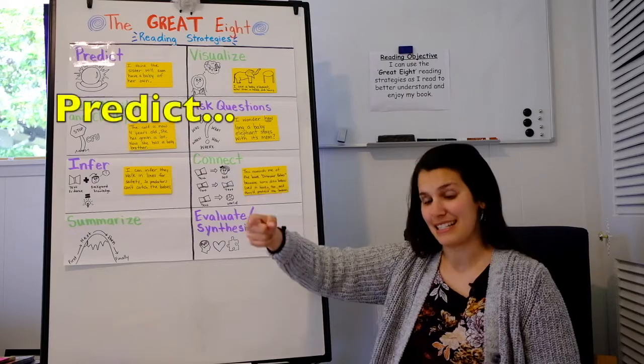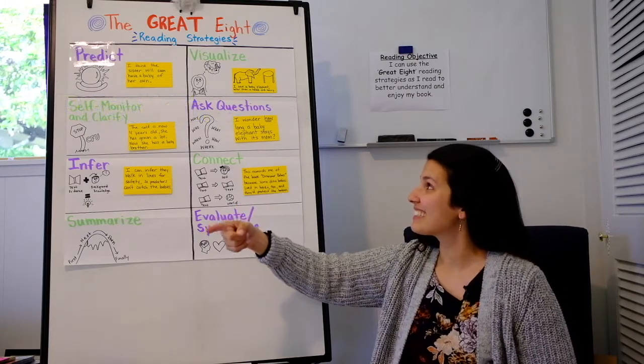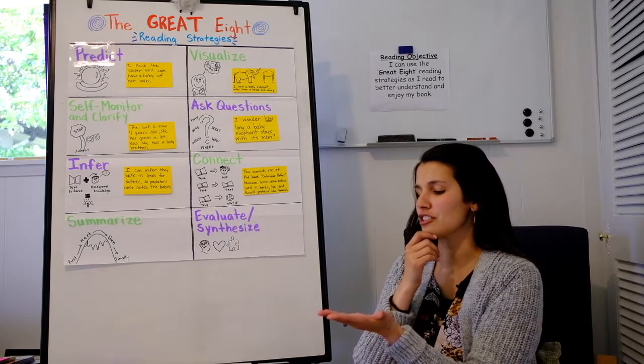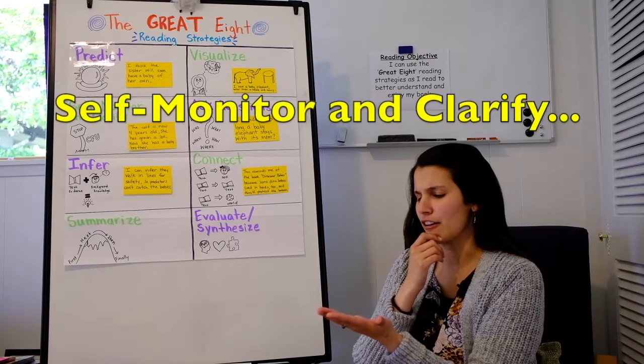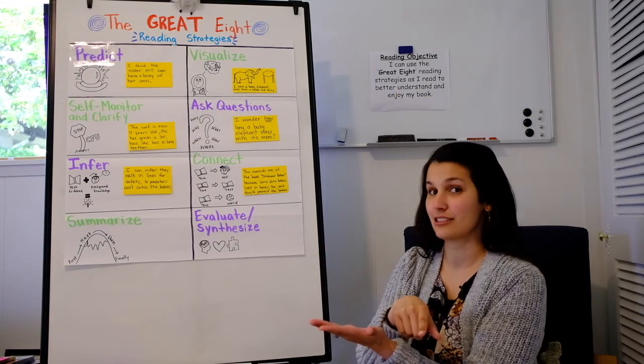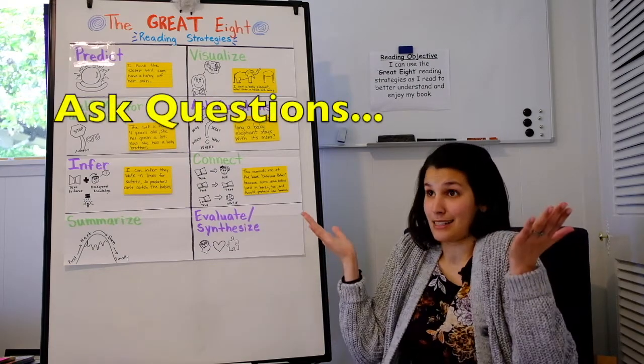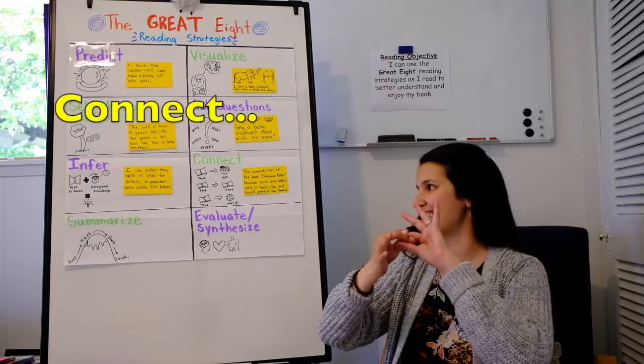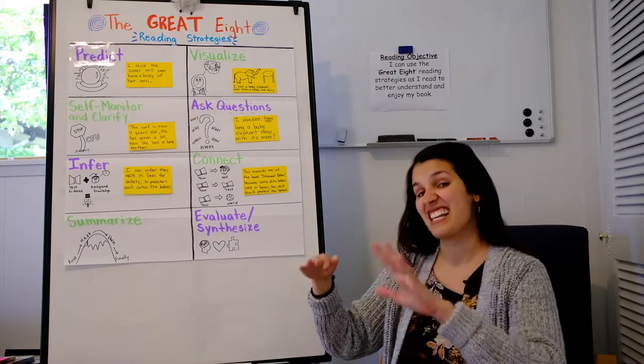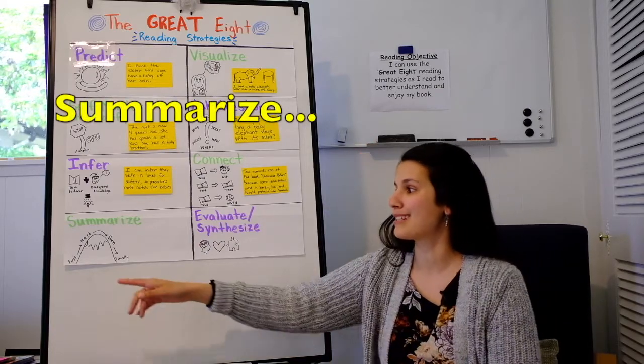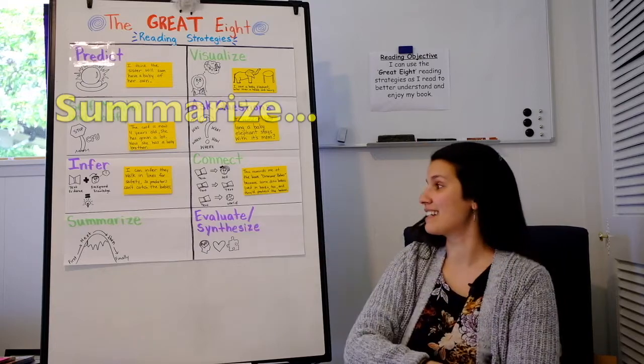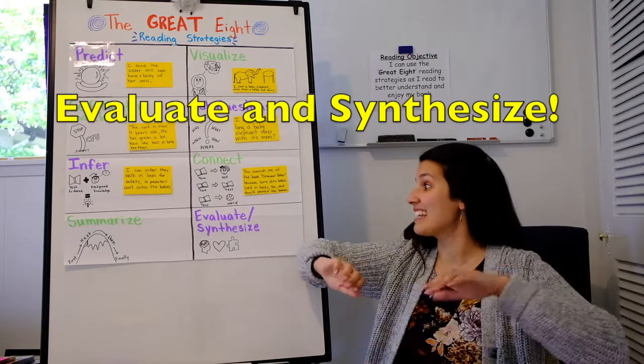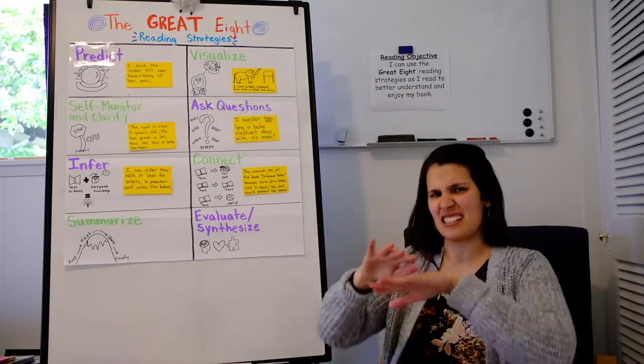So we'll say predict. Visualize - pretend you're holding a book, you're scratching your chin. Self-monitor and clarify - you go back to check and reread. Ask questions. Infer - like a light bulb's going off. Connect - just like we do our connecting fingers. Summarize - like we're doing our plot mountain: first, next, then, finally. Evaluate - we'll give it thumbs up or thumbs down. And synthesize - synthesize is like putting it all together.